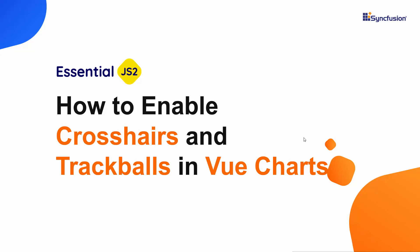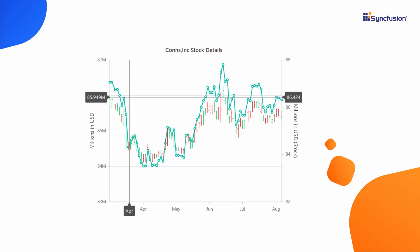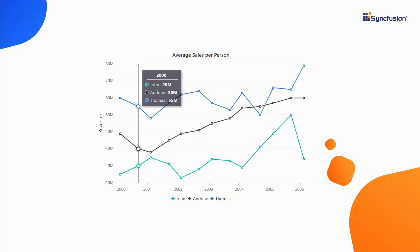Hi everyone, welcome back. In this video, I will show you how to display information about X and Y axis values of a chart with horizontal and vertical lines using the crosshair feature. I will also show you how to easily track and display information about the data points closest to the pointer position using the trackball feature.